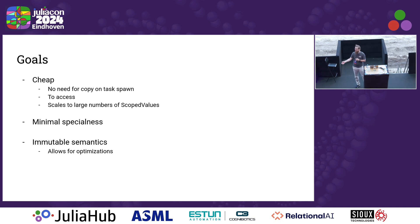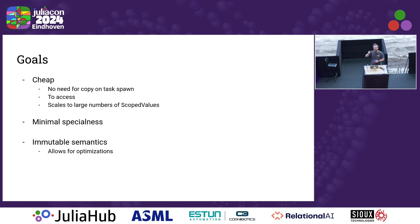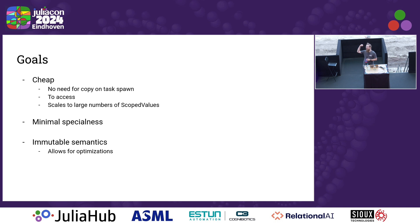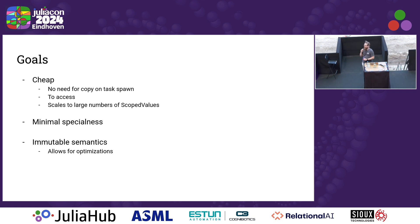They should scale to large numbers of scope values. We did a lot of different implementation exercises and ruled out a huge swath of them because they wouldn't scale to 3,000 values, which is what I expect the differential equations ecosystem to eventually need. They should also be minimally special — this is a new language feature the runtime supports, but the implementation outside of a few small things you should have been able to do in a package. One key difference to prior solutions is that I really wanted immutable semantics, so when you look up a scope value in a scope it should always return the same value, which allows for compiler optimizations.